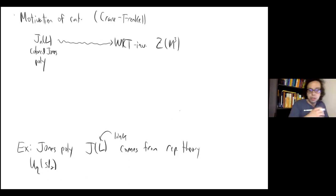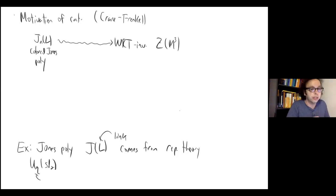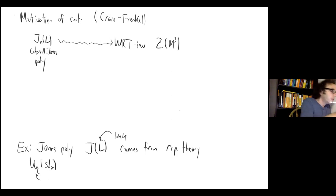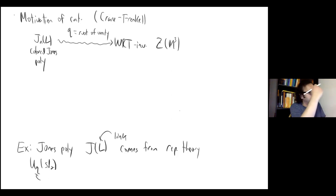There's a quantum parameter Q in UqSL2. In the Jones polynomial, Q can be thought of as a formal parameter or a complex number, but to make a manifold invariant, it's important that Q is a root of unity — a special complex number such that Q^n = 1 for some n. This passage from link invariants to three-manifold invariants was the beginning of quantum topology in the late 80s, early 90s.